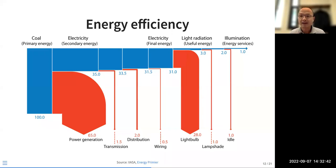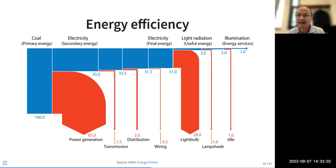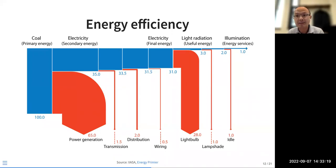Any link in this value chain where we can reduce energy losses is a gain for our energy and climate. Can we increase power plant efficiency? Reduce losses during transmission and distribution? Use more efficient LED? Turn off lights when not in use? These solutions involve technology, markets, and behavior change — each piece can contribute to improving energy efficiency and reducing the carbon footprint of our energy systems.